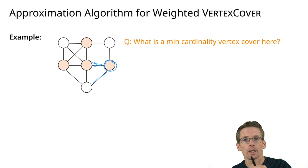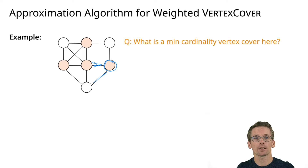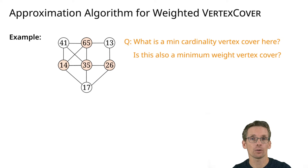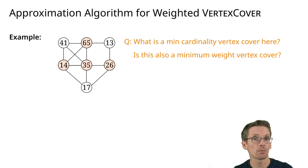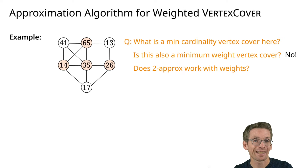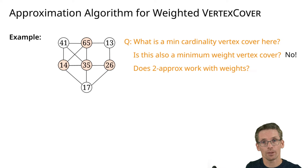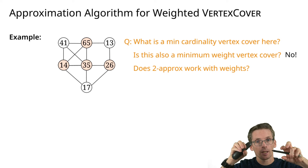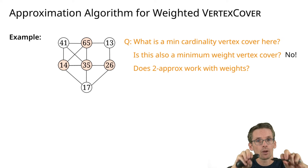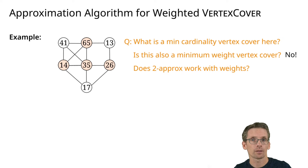Now let's assume each vertex has a cost or weight, and we want to select a set of vertices such that the sum of the weights is as small as possible. You can ask: is this cover still a minimum vertex cover? That is not the case. The next question is: does the standard 2-approximation for vertex cover — taking a maximal matching and both endpoints of each matching edge — still give a 2-approximation with weights?